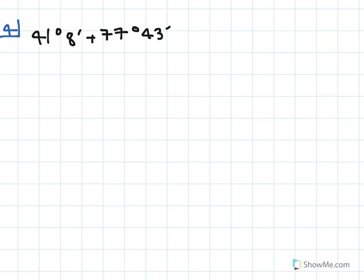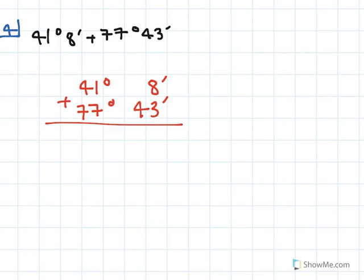This next problem deals with adding angles. We have 41 degrees 8 minutes plus 77 degrees 43 minutes. We can set this up as a simple addition problem. This is just basic addition: 8 plus 43, we know 8 plus 3 is 11, carry the 1, 4 plus 1 is 5, so we have 51 minutes. Then 7 plus 1 is 8, and 7 plus 4 is 11, so our solution is 118 degrees and 51 minutes.